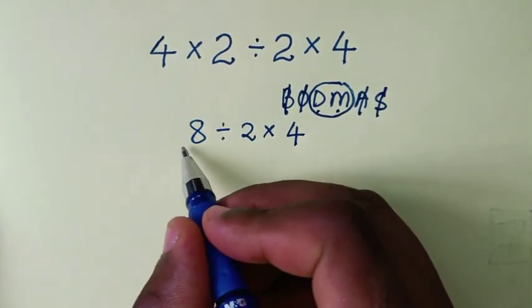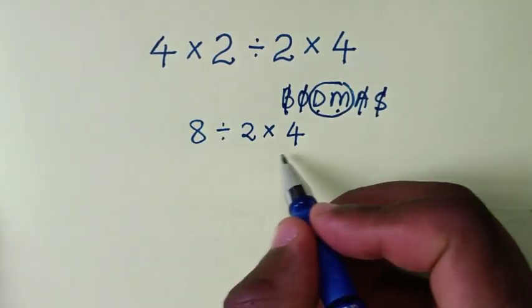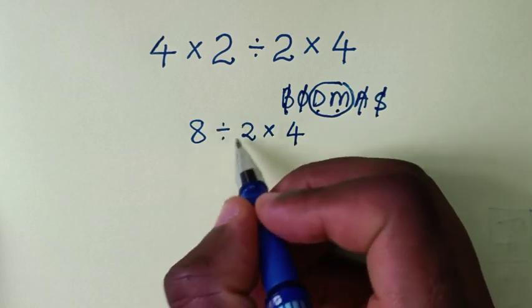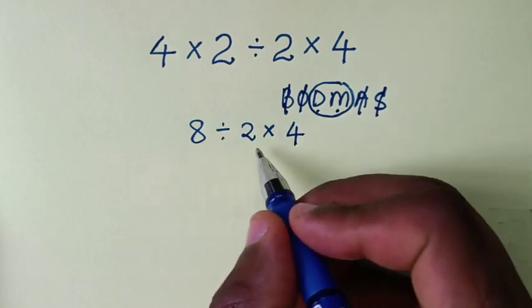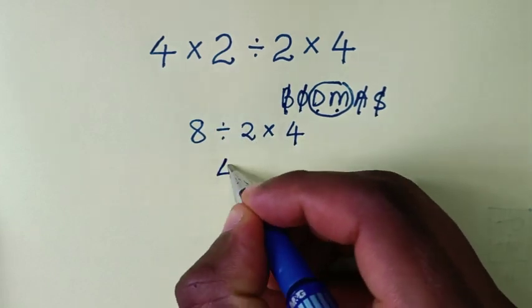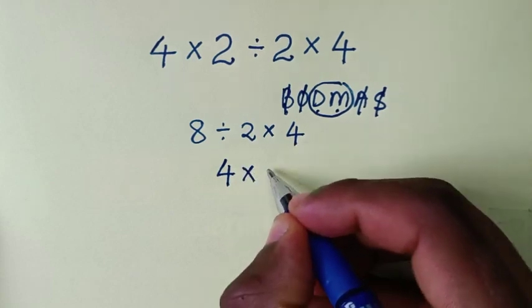In the next step, working from left to right, we start with division. 8 divided by 2 is 4, then times 4.